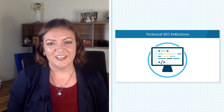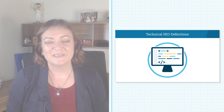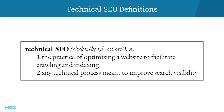So what is technical SEO and why is it so important? Technical SEO is, generally, the things you do to make it easier for search engines to find, crawl, interpret, and index your website. The result of search engines being able to do those things without encountering any issues along the way is good search visibility.